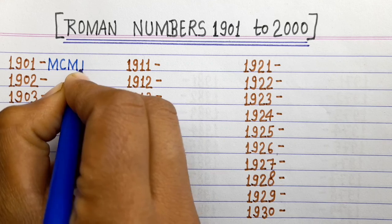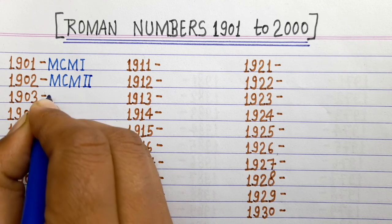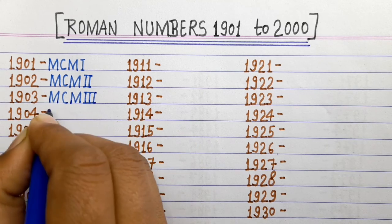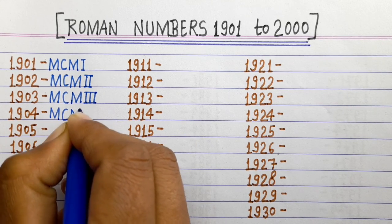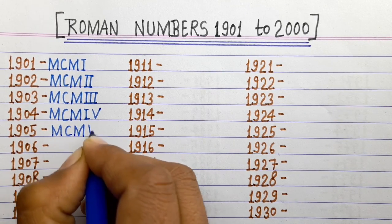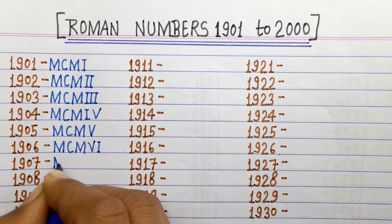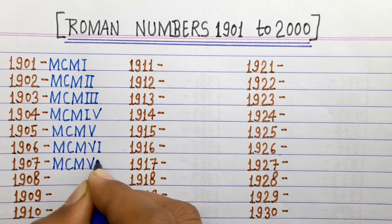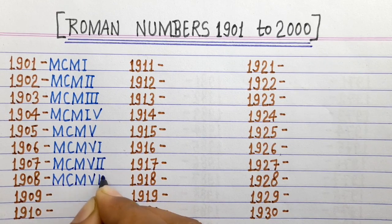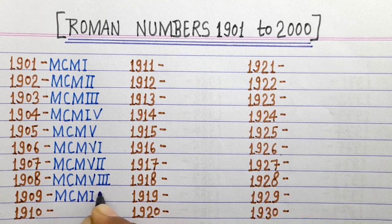1901 MCMI, 1902 MCMII, 1903 MCMIII, 1904 MCMIV, 1905 MCMV, 1906 MCMVI, 1907 MCMVII, 1908 MCMVIII, 1909 MCMIX.